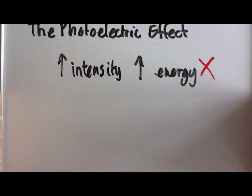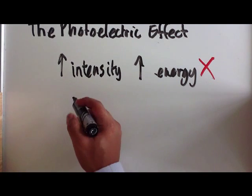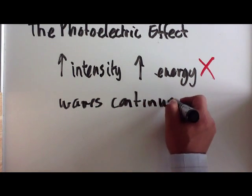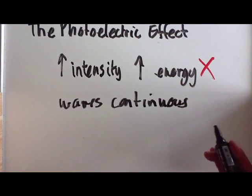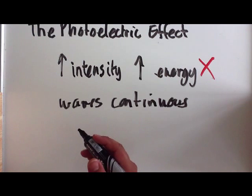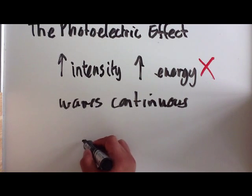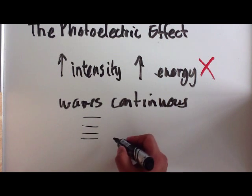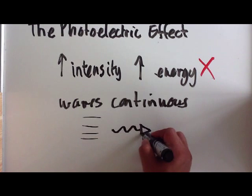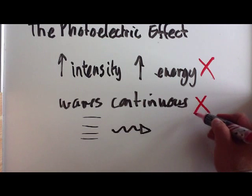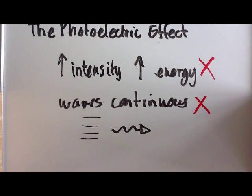The other thing about the wave theory is because light is, because waves are continuous, that means that energy will build up. And so even if the initial energy is too low, eventually the energy will build up and build up and build up and will be absorbed until there's enough energy for electrons to be released, because the energy has built up. However, we do not see this happen. And that's another reason why the photoelectric effect experiment does not support the wave theory, because this is not seen.